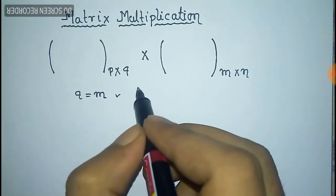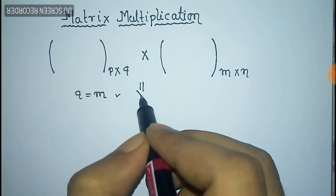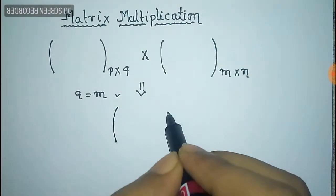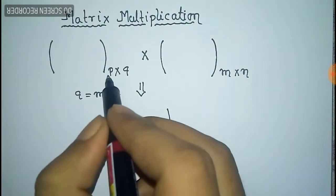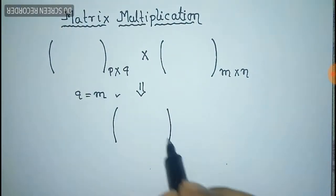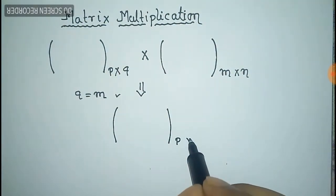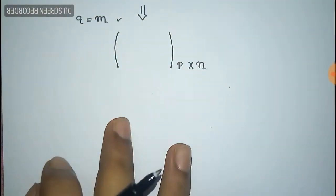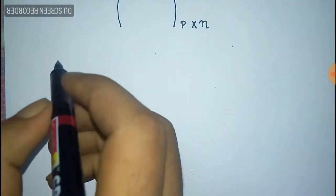Once that condition is satisfied, we can multiply the matrices, and after multiplication we get a new matrix which will have the order P by N, where P is the number of rows of the first matrix and N is the number of columns of the second matrix. Now we shall take an example.